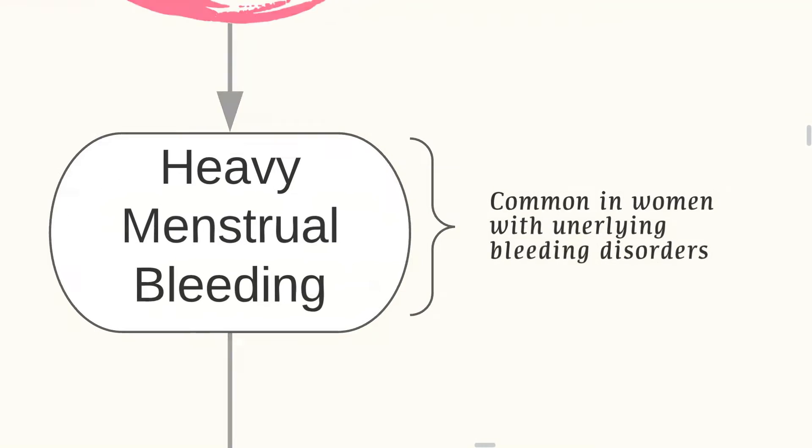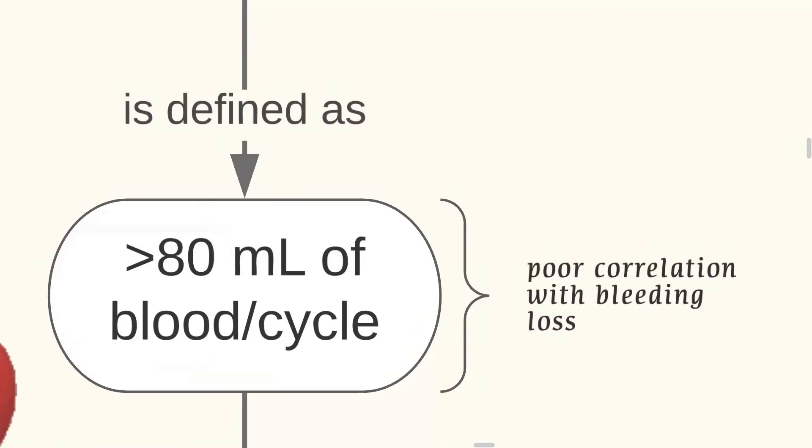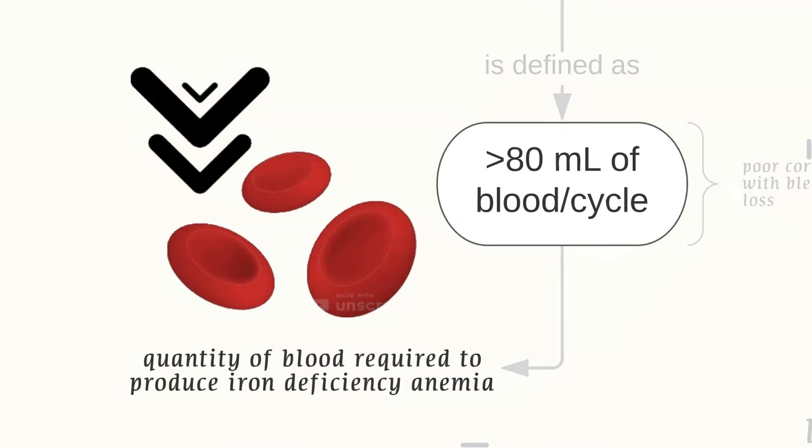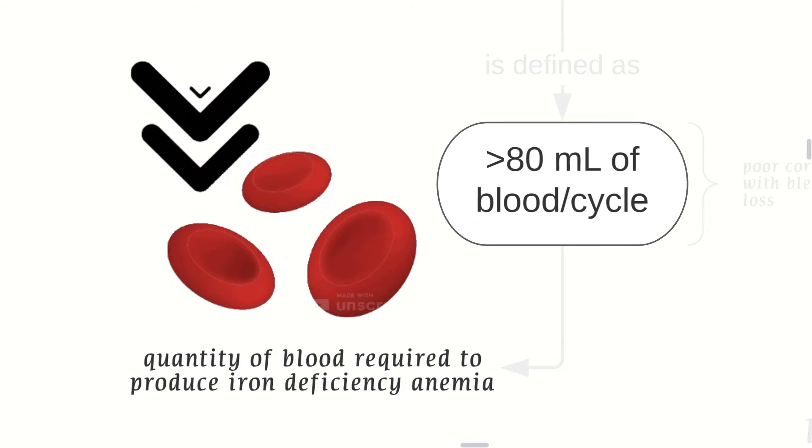And heavy menses, which is common in women with underlying bleeding disorders, is defined as greater than 80 mL of blood per cycle. But this has poor correlation with bleeding loss. Why 80 mL? This is the quantity of blood required to produce iron deficiency anemia.